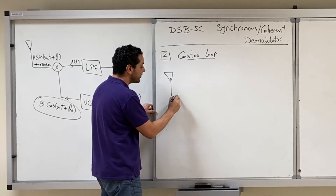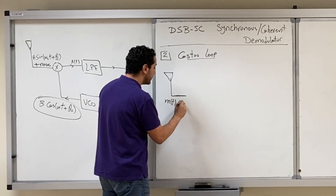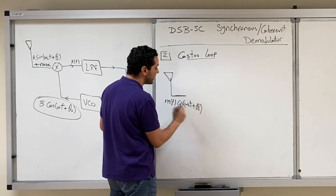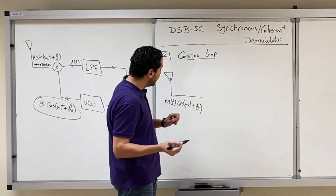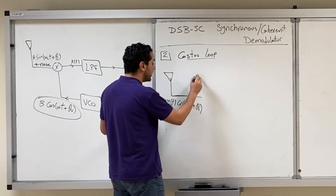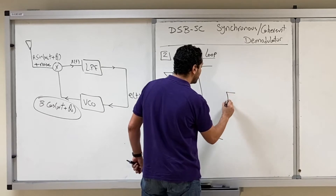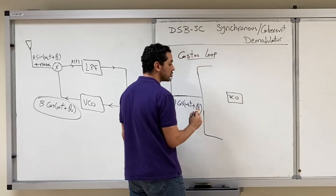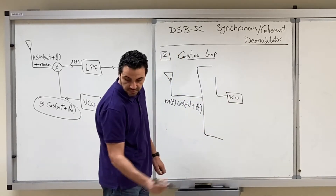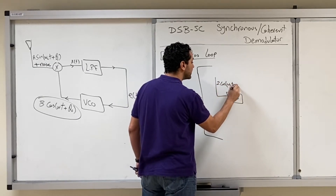You receive on the antenna a double-sideband signal, which is m(t)·cos(ωc·t + θi), where θi is the phase that you receive and don't know yet. You then divide this signal into two branches. At the same time, you have a VCO — a voltage-controlled oscillator — which gives you a signal of 2·cos(ωc·t + θ₀).